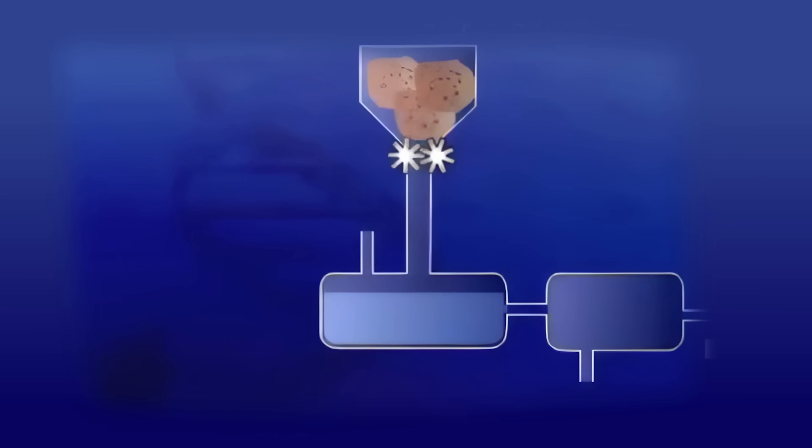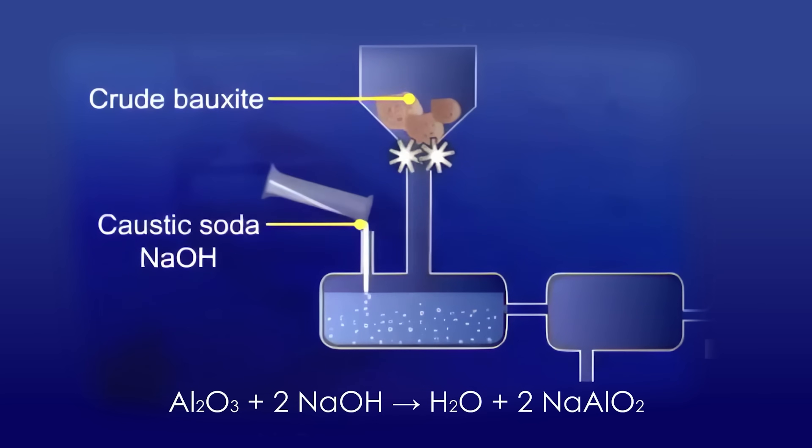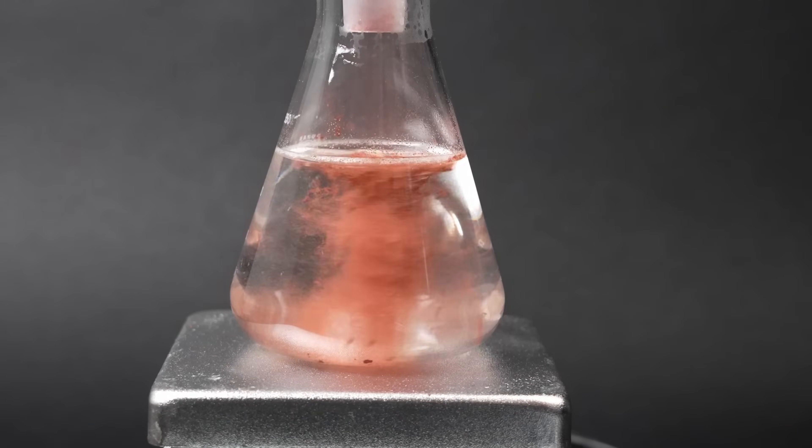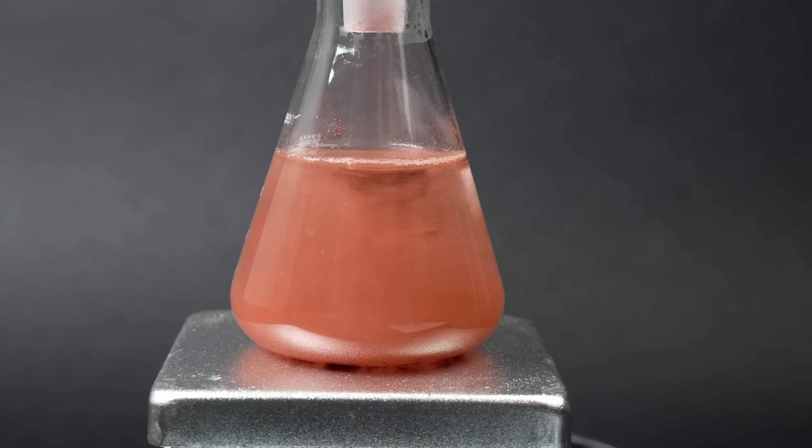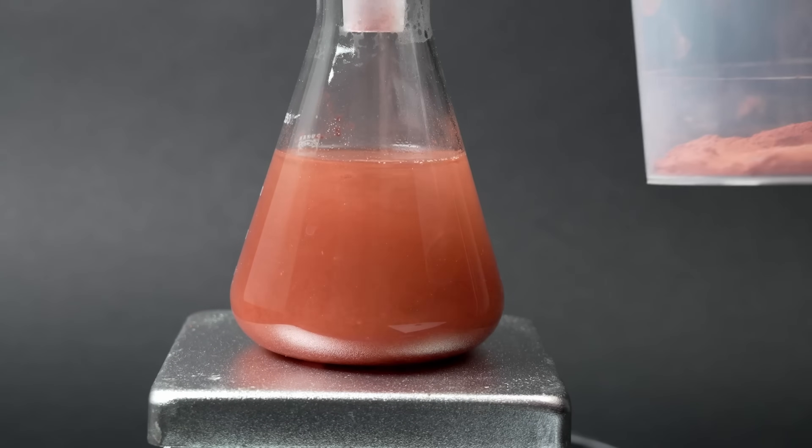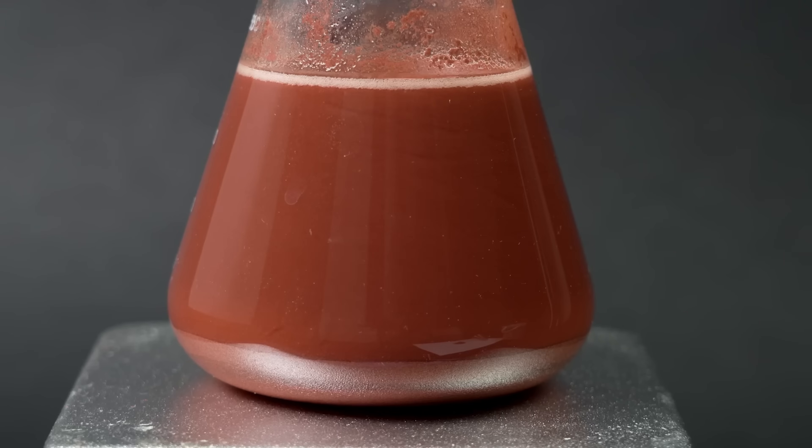The first step in bauxite ore processing is the so-called Bayer process, in which the crushed ore is dissolved under pressure in a solution of alkali or sodium hydroxide at a temperature of 340 degrees Fahrenheit. The process often takes place in opaque containers, but if you try to reproduce it in an ordinary flask, you will see the gradual dissolving of aluminum oxides and hydroxides together with sand in the hot lye, while the other impurities form a dark brown precipitate.